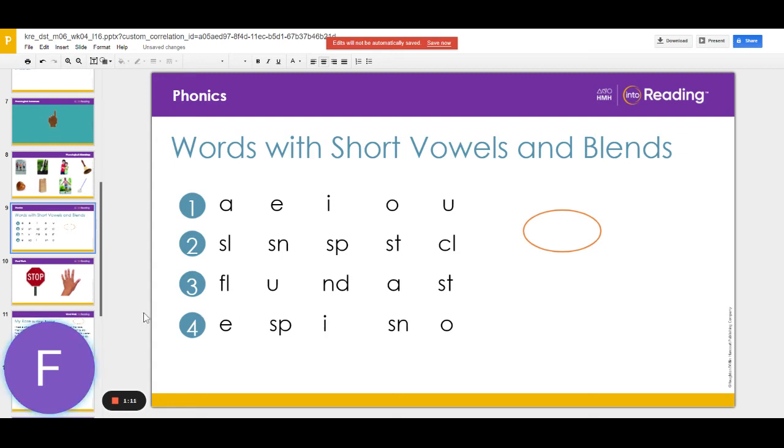Let's keep reviewing in lines three and four. First, say the sounds for the blends and vowels silently. Ready? Go.